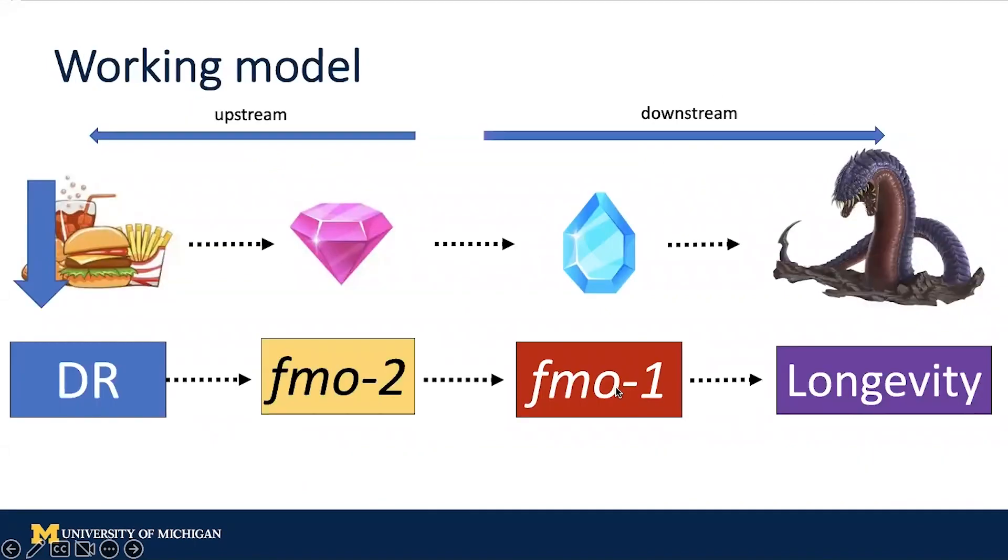With all these findings, we come to our final working model. Our model suggests that food restriction is the most upstream factor, and the pink gem, or FMO2, is downstream of the food restriction. The blue gem, or FMO1, is downstream of the pink gem, which all eventually leads to longevity.